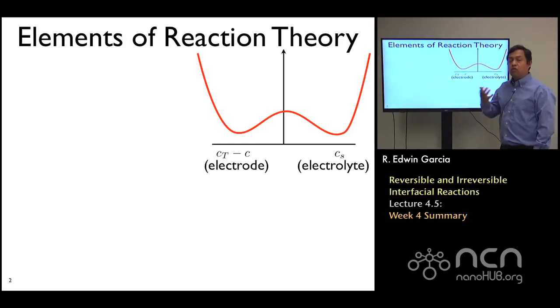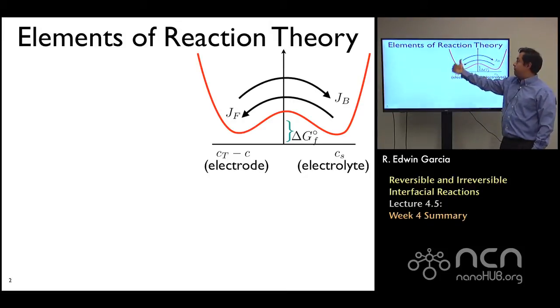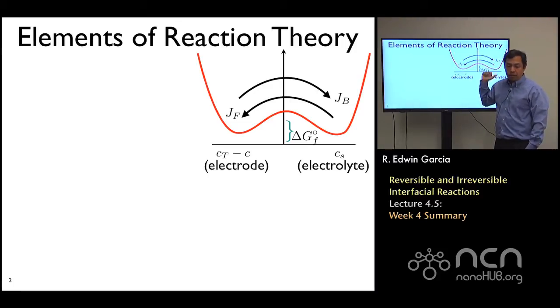First, we introduced some elements of reaction theory, where we said that on one side of the electrode and the other side of the electrolyte, there's an energy barrier that we have to overcome in order to inject lithium into the material or to plate it. If you account for that energy barrier, you have to introduce contributions for forward and backward reaction rates at equilibrium. These two balance each other so that you have kinetic equilibrium where the rate of the forward reaction is balanced by the backward reaction.